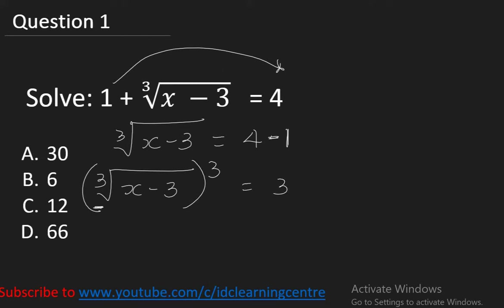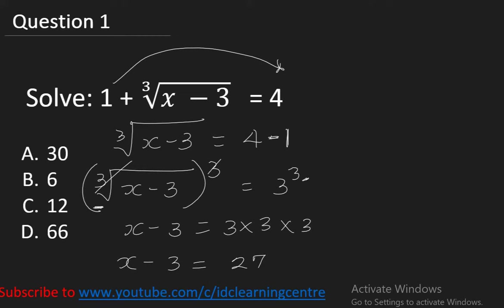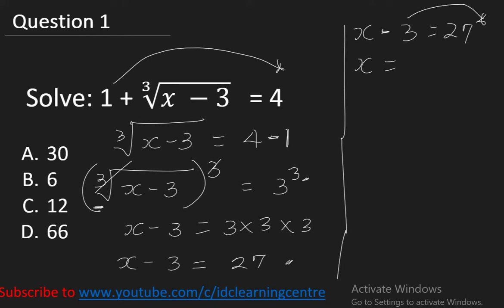We take the cube of both sides, since the cube breaks the cube root. By math, whatever you do to one side, you must do to the other side. Taking the cube of the left hand side, we must also take the cube of the right hand side. The cube cancels the cube root, giving us x minus 3 equal to 3 cubed. This means 3 times 3 times 3. The exponent tells you how many times you need to multiply a number by itself. So x minus 3 equals 27.